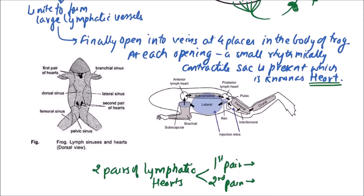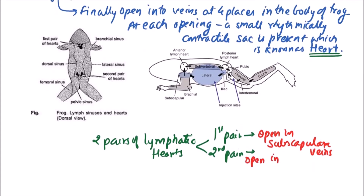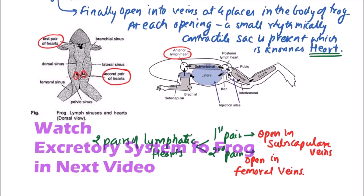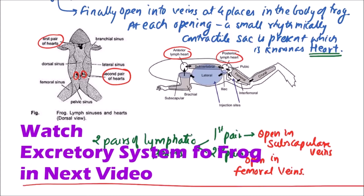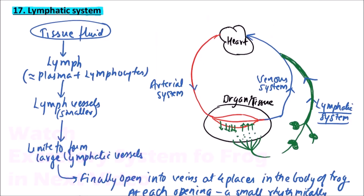The first pair of lymphatic hearts is where the lymphatic system opens into the sub-scapular veins. The second pair is located where the lymphatic system opens into the femoral veins. The first pair is also known as the anterior lymph heart, and the second pair is also known as the posterior lymph heart. So these are the two pairs of lymphatic hearts in the body of the frog.